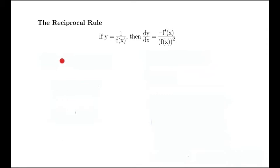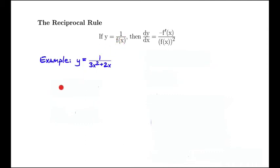Let's look at an example to see how we use it. Let's take y equals 1 over 3x squared plus 2x. In this case, we can see what the function is in the denominator: f of x is equal to 3x squared plus 2x. To find the derivative dy/dx, we'll need the derivative of f of x.